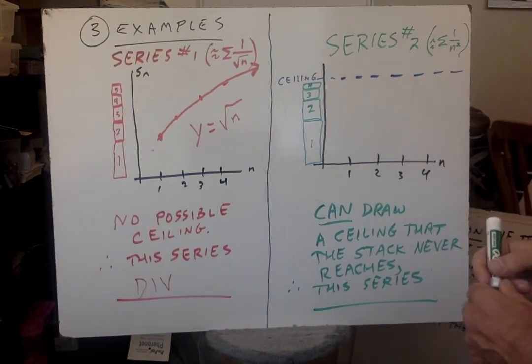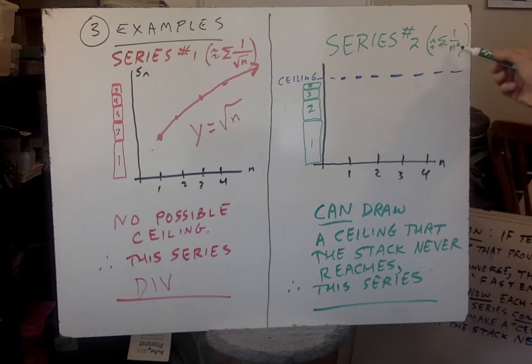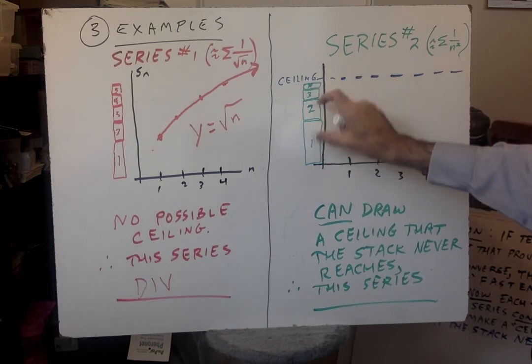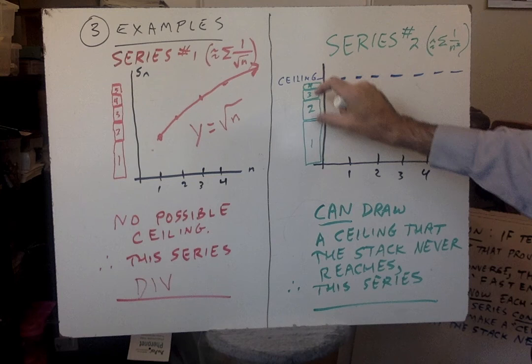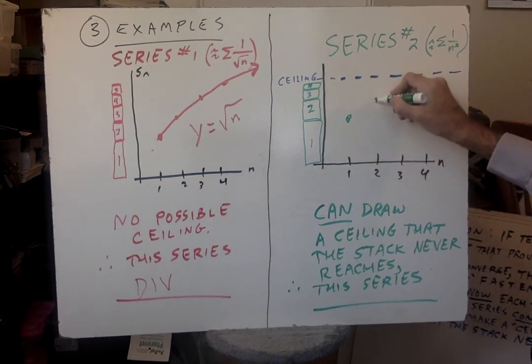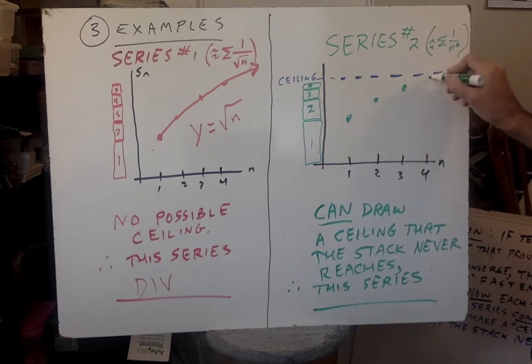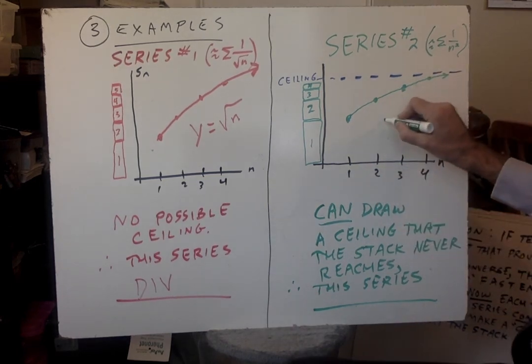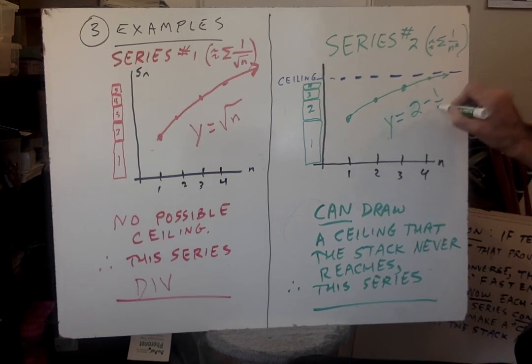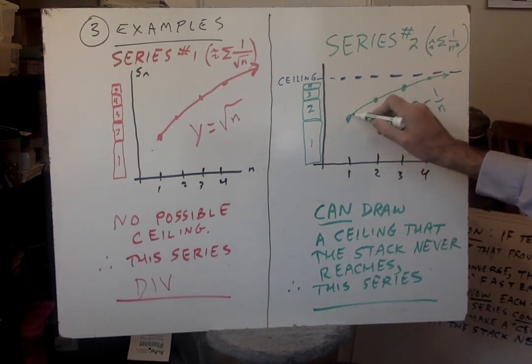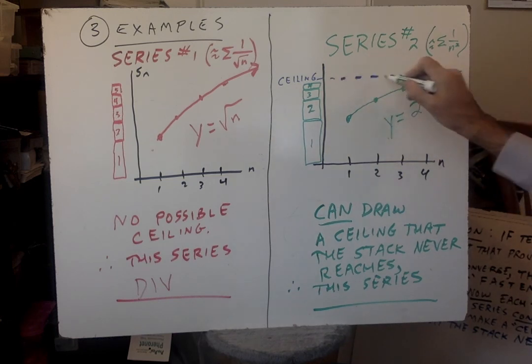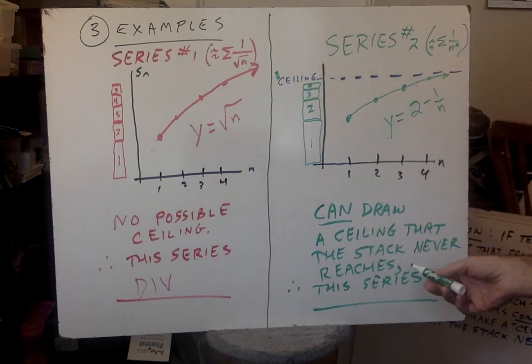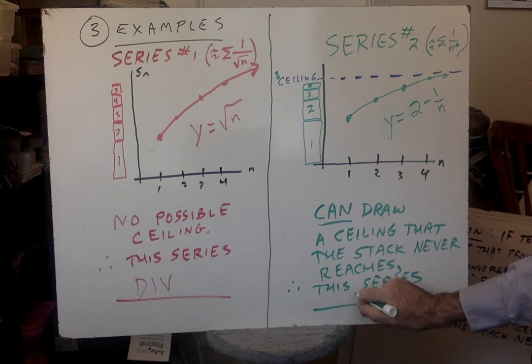Then come on over and look at this one. This is loosely based on the series one over n squared. Here are the individual terms stacked vertically, like building blocks. First block, second block, second term, third term. So this would be the first partial sum would be this high, second partial sum would be this high, third would be this high, and fourth would be this high. And what this series does, this is like y equals 2 minus 1 over n. So see the shape? It has a horizontal asymptote. It has a ceiling. We even know what that ceiling would be from looking at this. We see that the ceiling would be 2. So you can draw a ceiling that the stack never reaches. So we just say this series converges.